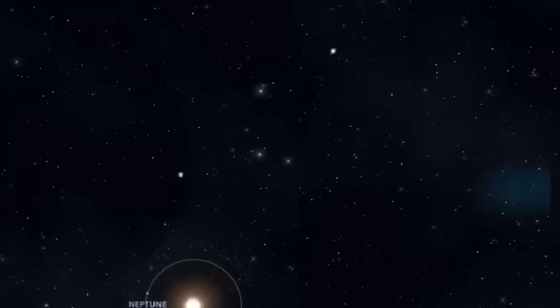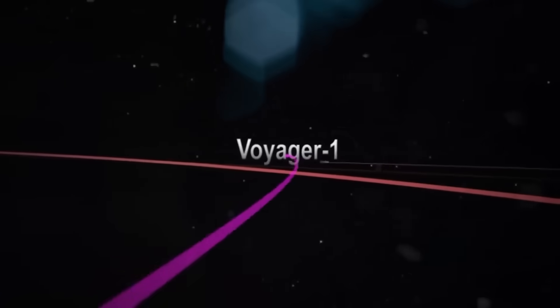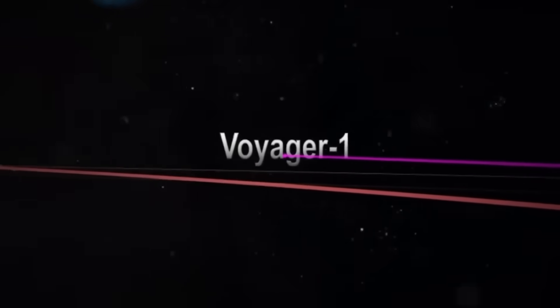Voyager didn't just drift. It locked onto that region, its antenna holding steady as if something out there had commanded it to listen, or as if something was listening back.